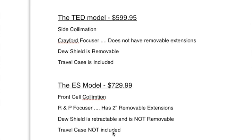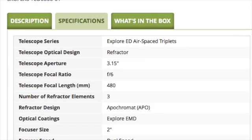And finally there's a travel case that comes with the cheaper scope, but the travel case is not included in the ES model. Otherwise, the specifications are exactly the same for both telescopes.